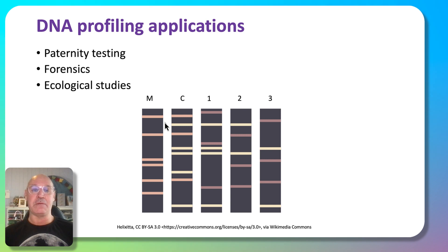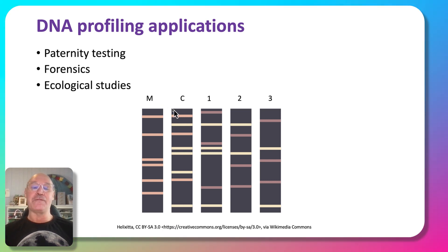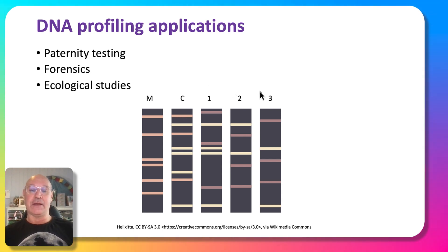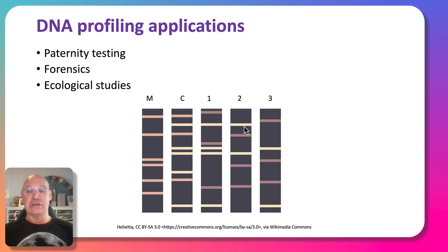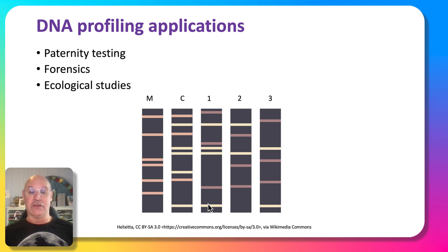Here's an example of how we might use it for a paternity test. Every fragment of DNA in the child's profile needs to come from either the mother or the father. The bands from the mother are coloured orange, and we need to match the remaining bands to a potential father. Dad one shows four matching bands, compared to two matches for dad two and two for dad three. From a probability point of view, we would say that dad one is the father.